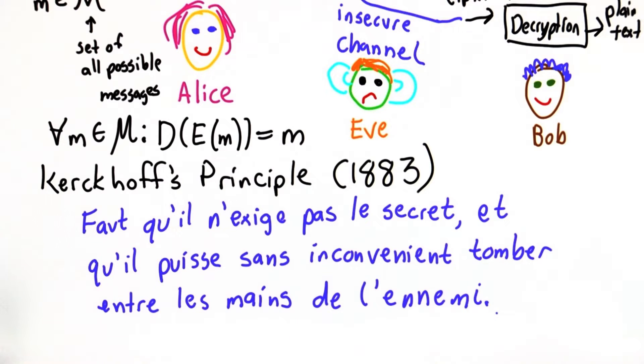I apologize for my French, but this loosely translates as the cipher must not depend on secrecy of the mechanism. It must not matter if it falls into the hands of the enemy.